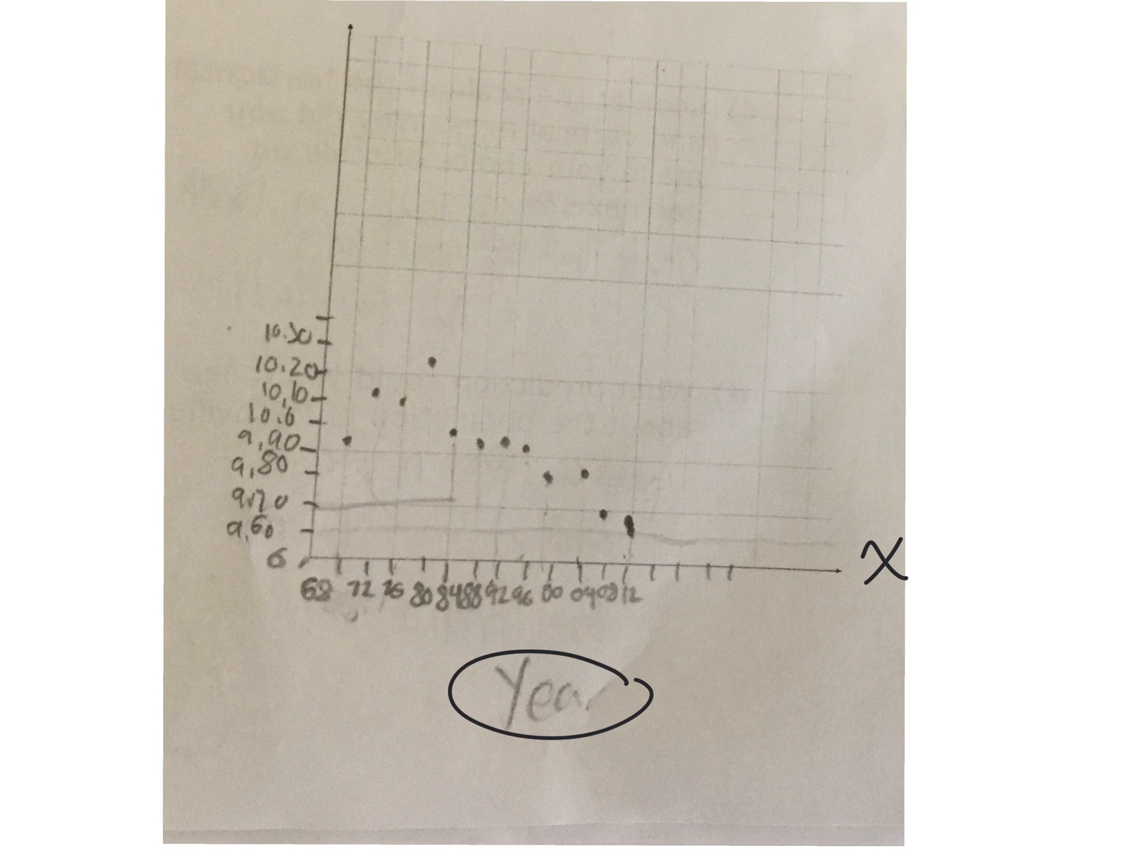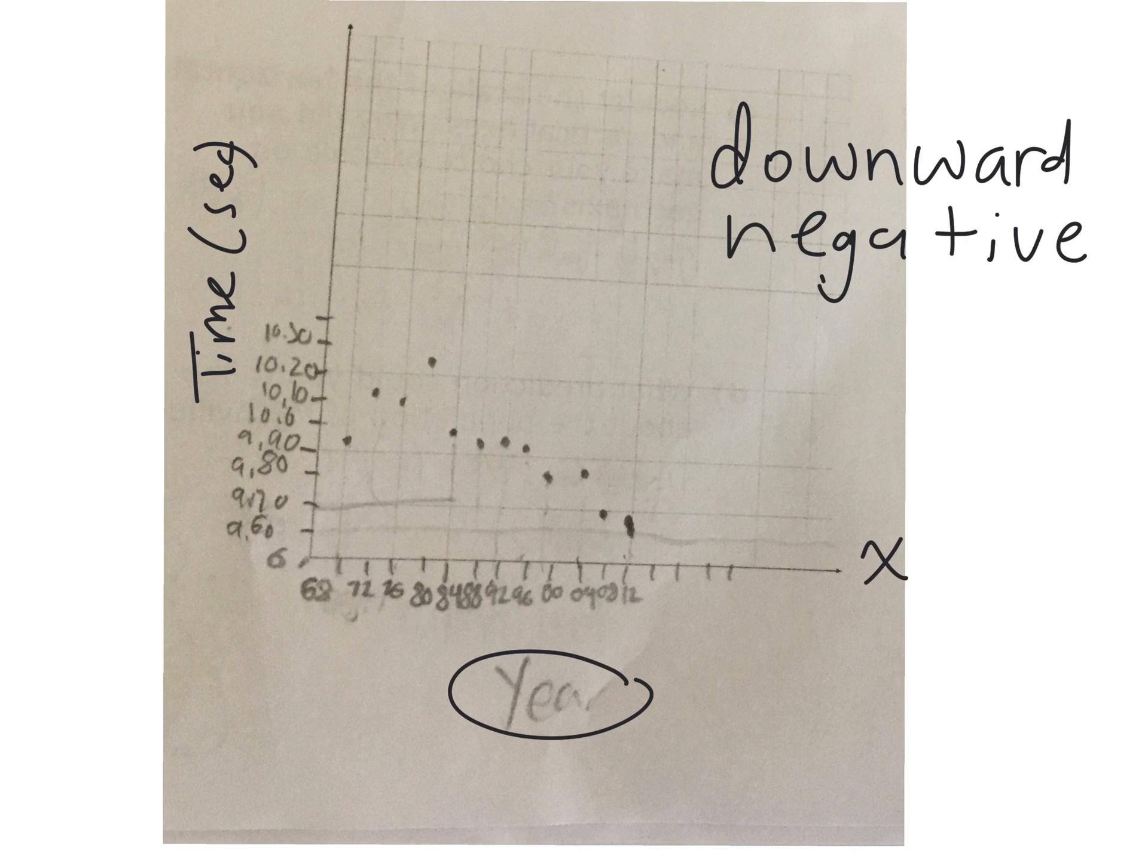So we're looking at a comparison between year and time in seconds. Okay, so what would you say the trend is in this data? Downward. Downward negative trend. I want you to write this down even if you didn't graph it. Now, in this case, because it's going down, it's actually better in this situation because the smaller the number, the better the speed, right? Yes. The faster they go.